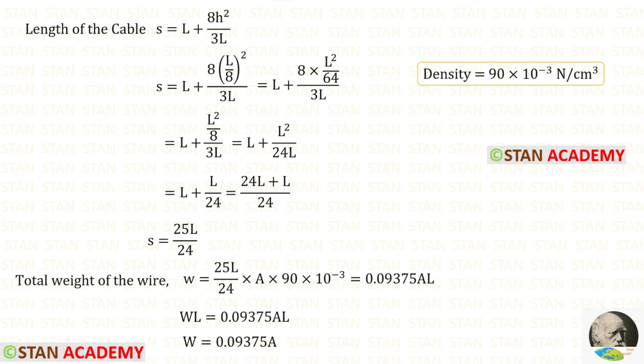Now let us find the total weight of the wire. To find that we have to multiply the density with the volume. Volume is equal to length of the cable S into cross sectional area A. After multiplying we will get this.